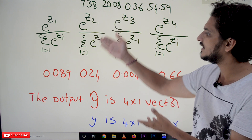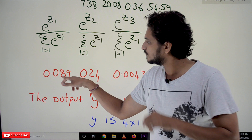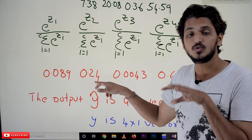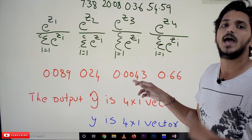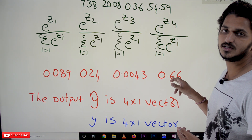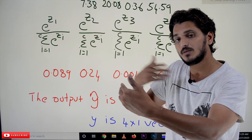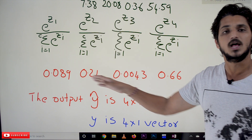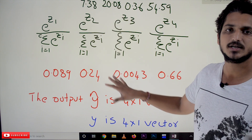These values are probability values. If we feed forward the first image, the probability it belongs to cat is 0.089, to dog is 0.24 (24% chance), to hen is 0.0043, and to others is 0.66 (66% chance). The highest probability, 0.66, determines the output — so the neural network predicts this image belongs to the 'others' category. The summation of all these probability values will be 1. That is what the Softmax function does.